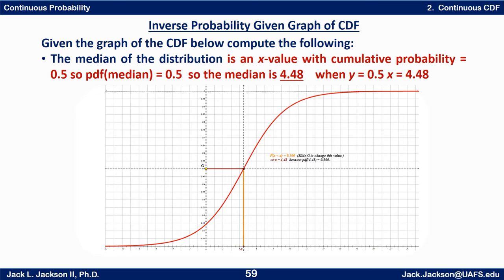Now let's find the median. The median of a distribution is an x value with a cumulative probability equal to 0.5, so the CDF of the median equals 0.5. Draw a horizontal line at 0.5, find the x value where it crosses the graph, and it looks like that's about 4.48. At that point, half the probability is to the left and half is to the right.